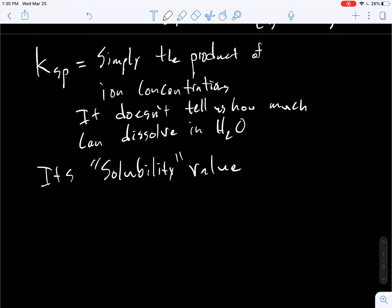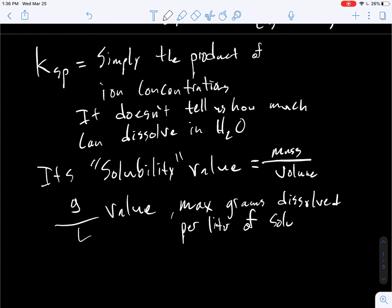This is the number that you can pretty much find on Wikipedia for compounds. If you Google a compound and just say, looking for the solubility of substance, this is typically a mass or moles divided by volume. So you'll typically see a grams per liter value. That's very common. So how many max grams dissolved per liter solution?